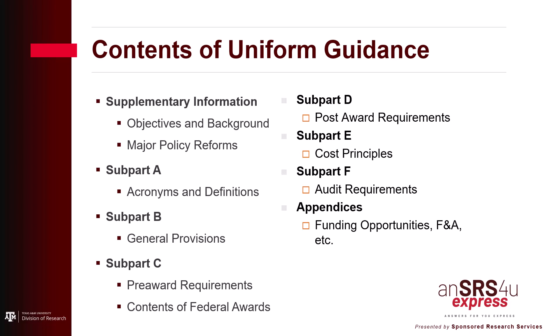Subpart D post-award requirements include many of the administrative requirements to manage the project from award to closeout. Subpart E covers cost principles, including direct and indirect costs and considerations for selected items of cost. Subpart F lists the audit requirements and responsibilities of auditees and auditors. Uniform Guidance also contains Appendices 1 through 12, many of which are concerned with the calculation of indirect cost rates for selected types of entities.